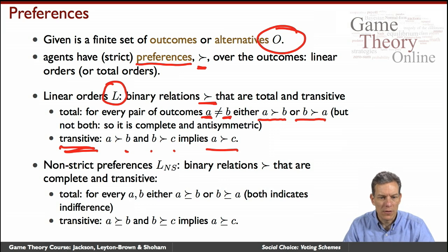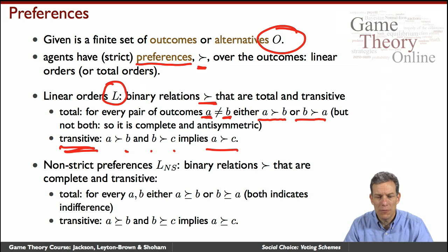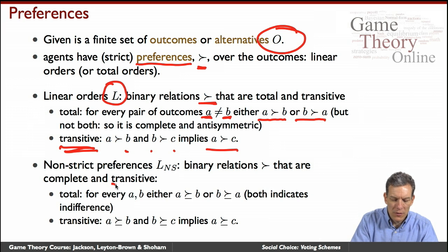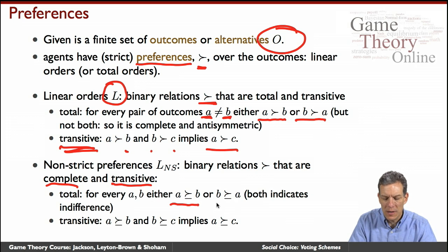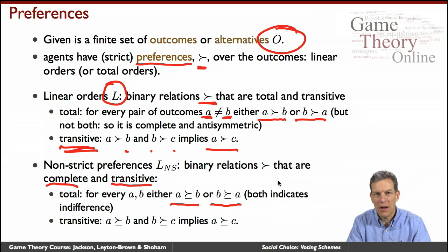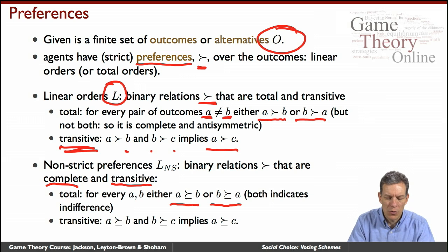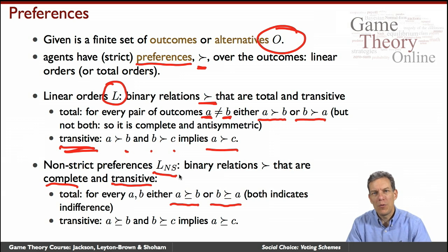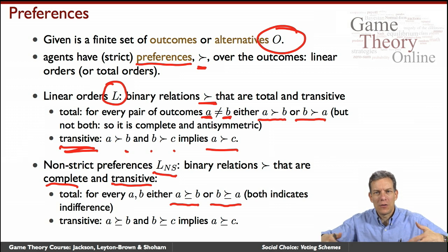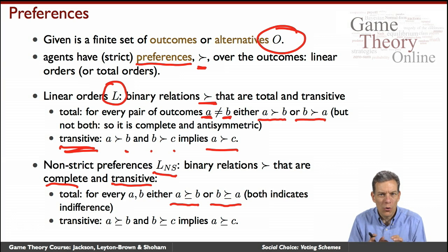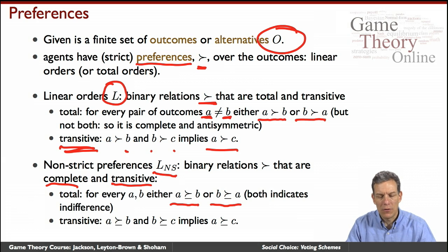Sometimes we'll also be working with non-strict preferences, where someone could be indifferent. So we'll allow for transitivity and completeness — A could be weakly preferred to B, B weakly preferred to A, and both relationships could hold at the same time, meaning you're actually indifferent. It might be that everybody in society has a strict ranking, but society as a whole ends up with a weak ordering.